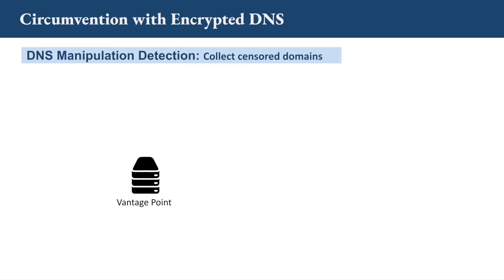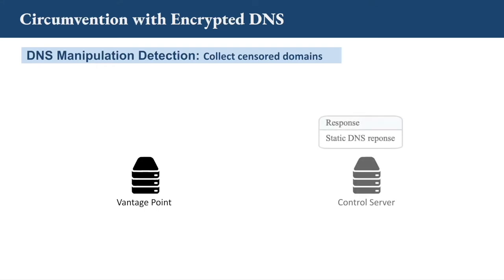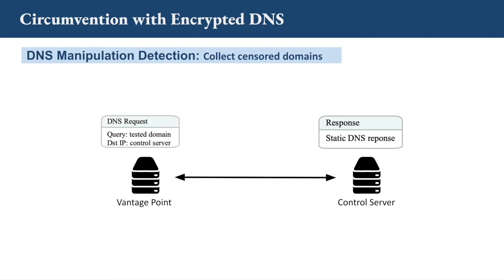With the vantage points established, we need to detect which domains experience DNS manipulation by on-path devices. To do so, we set up a control server that replies with a static DNS response to arbitrary DNS requests. We send DNS requests from our vantage points to this control server. If there is no manipulation, we get the static response; if an on-path device manipulates the response, we receive a different result. In this way, we can identify the censored domains at our vantage points.